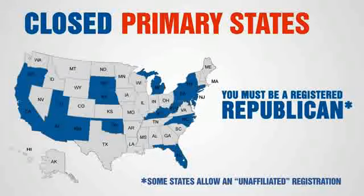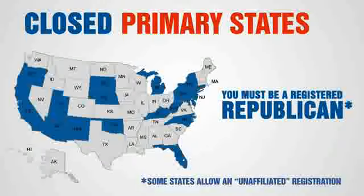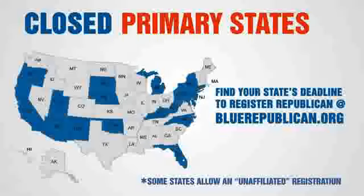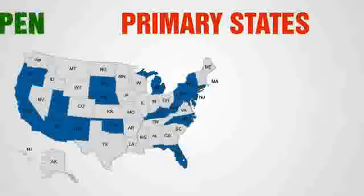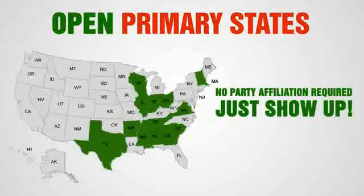In states with closed primaries, you will need to be registered as a Republican in order to vote for Ron Paul in the Republican primary. The deadlines to change your party affiliation to Republican differ from state to state, and some of these deadlines are many months before the primary. So if you live in one of these states, your most immediate concern should be changing your party affiliation to Republican. Deadline dates can be found at BlueRepublican.org. If you live in one of the other primary states, you do not have to worry about party affiliation, as these are either open or blanket primaries.